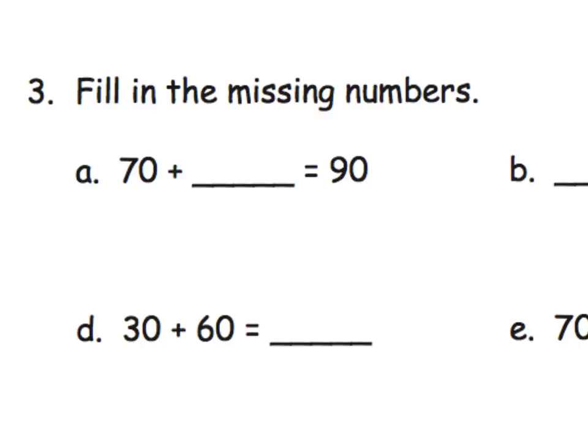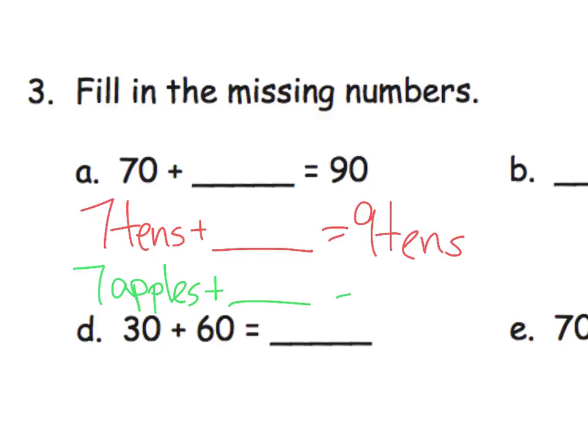And the idea is parents and teachers try and resist the urge to just help students run to some sort of algorithm, especially algebra. Oh, you can use subtraction to find the missing addend. No, don't do that. Just think of it. If your students need help, revert to that unit notation. For example, on problem A, if a student is struggling, say, let's take a step back and call this seven tens plus what equals nine tens.